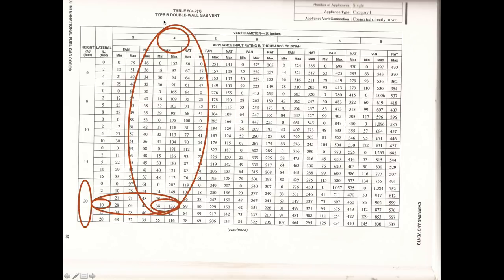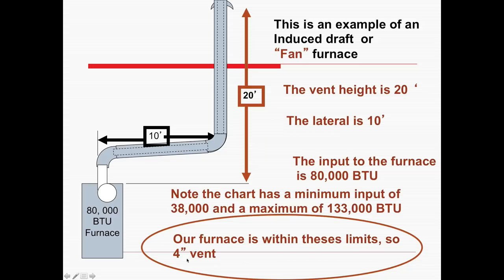One thing to go through here — these charts are confusing. Notice right here we have Type B double wall gas vent. Over here: number of appliances — one single appliance, category one, connected directly to vent. If you're looking at the different charts, you've got to be sure you've got the right one. There will be one for single wall vents, ones for masonry chimneys, ones for multiple furnaces, and so on. Getting to the right chart is probably the hardest part. So we end up with a four-inch vent on this appliance.